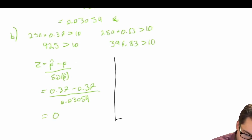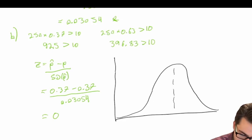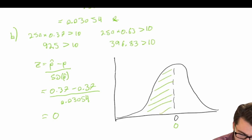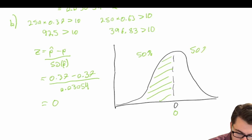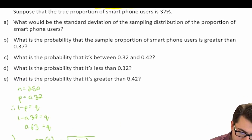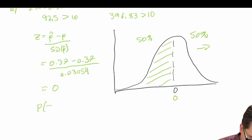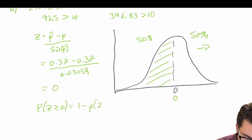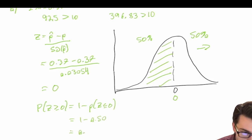If we draw our normal distribution, we're centered around a z-score of zero. The distribution is perfectly symmetrical about our mean, which means 50% of observations fall below zero and 50% fall above zero. Therefore, the probability that z is greater than or equal to zero equals one minus the probability that z is less than or equal to zero, which is one minus 0.50, giving us a probability of 0.50.